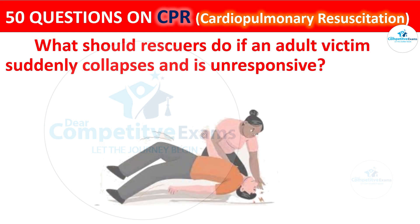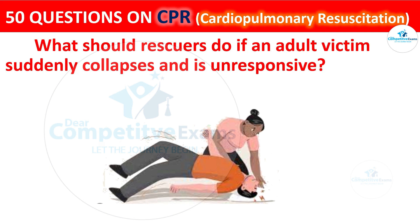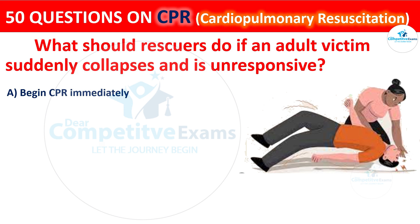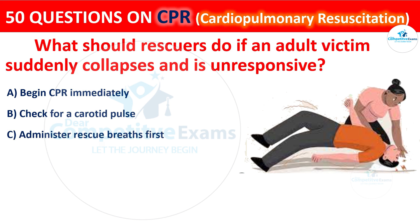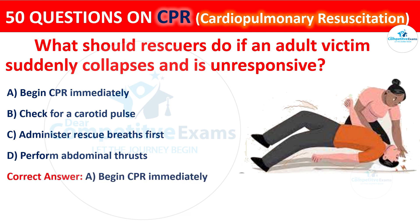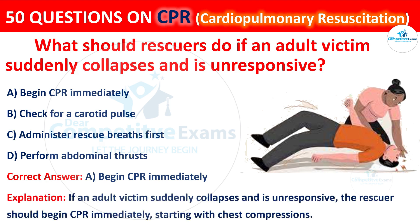Question 45: What should rescuers do if an adult victim suddenly collapses and is unresponsive? The options are: begin CPR immediately, check for a carotid pulse, administer rescue breaths first, or perform abdominal thrusts. The correct answer is A — begin CPR immediately. If an adult victim suddenly collapses and is unresponsive, the rescuer should begin CPR immediately, starting with chest compressions.